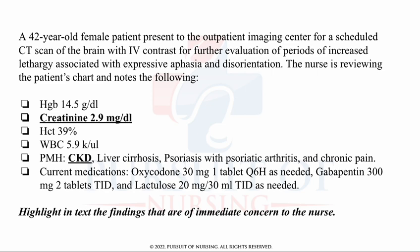What should be of immediate concern is that the creatinine is 2.9 and the patient has a past medical history of chronic kidney disease, because she is going to have a CT of the brain with IV contrast. Whenever contrast dye is used in a procedure, it is important for the nurse to ensure adequate renal function prior to the procedure by assessing renal labs. A creatinine of 2.9 is elevated, indicating current kidney injury and a need to avoid contrast dye. Additionally, whenever contrast dye is used, you always want to promote increased hydration post-procedure to adequately flush the kidneys.